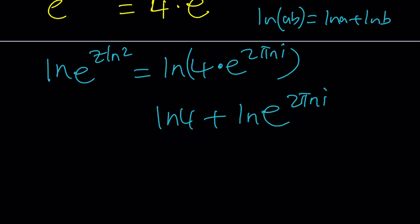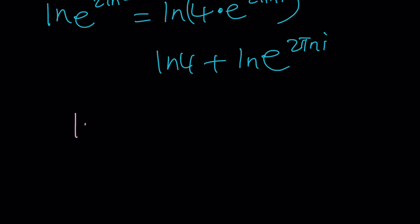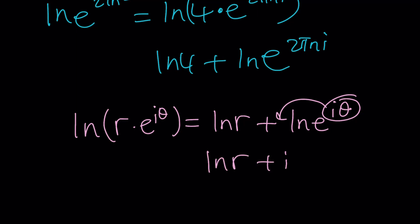Or if you wanted to do it in a more general form, because a b don't have to be real numbers. If you have something like ln r times e to the i theta, this is going to turn into ln r plus ln e to the i theta. But then you can bring this to the front and ln e is 1. So it's going to become ln r plus i theta.